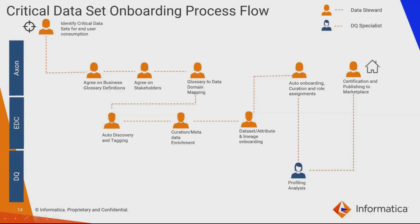At this stage, we have identified the critical dataset but have not checked the quality. The profiling analyst can start building profiles around the dataset, and stewards can start creating rules to check data quality. The stewards can build the certification process and document which critical data sets are ready to publish into the Axon marketplace. At the end of this process flow, you have built a basic catalog where you have set business definitions, expectations around the critical dataset, assigned stakeholders, and lineage from the physical data set is onboarded into Axon in user-friendly terms. Through the involvement of a DQ specialist, you have built data quality rules and trend analysis. Finally, it publishes to the marketplace for end customers to discover.